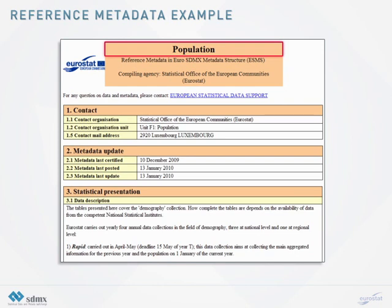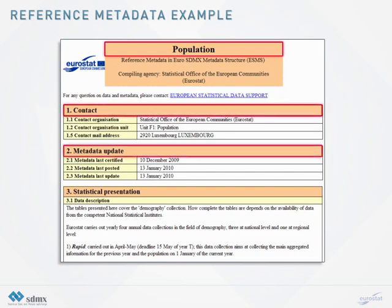This figure shows that reference metadata contains descriptive information such as contact details, last updates of the reference metadata, and information on statistical presentation. The reference metadata window can present the information in a clean and organized manner, because the metadata structure definition defines the structure of the report and provides useful names and descriptions for the information being reported. In short, this example demonstrates the utility of metadata structure definitions in support of such quality frameworks.